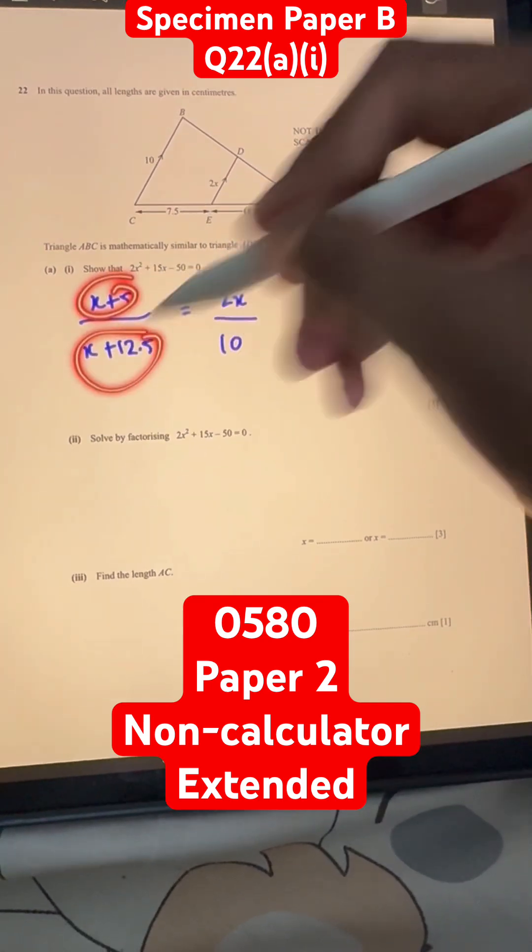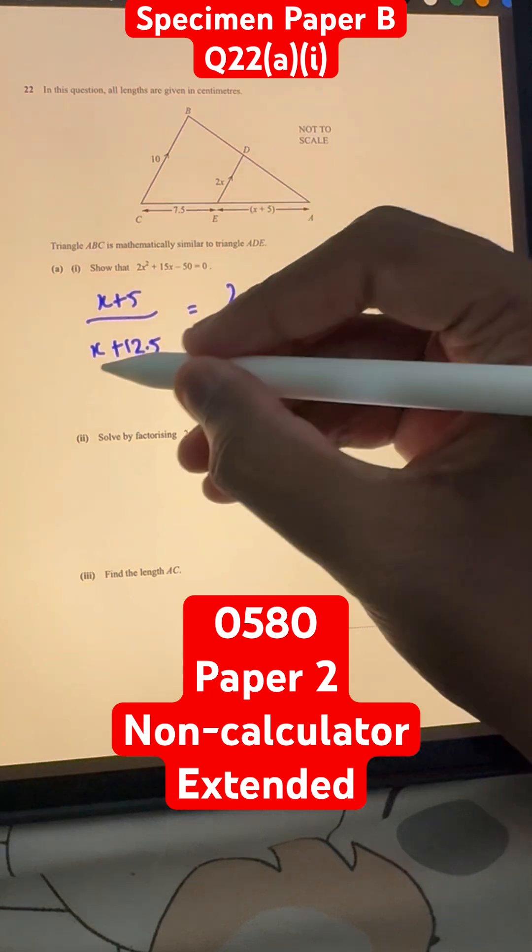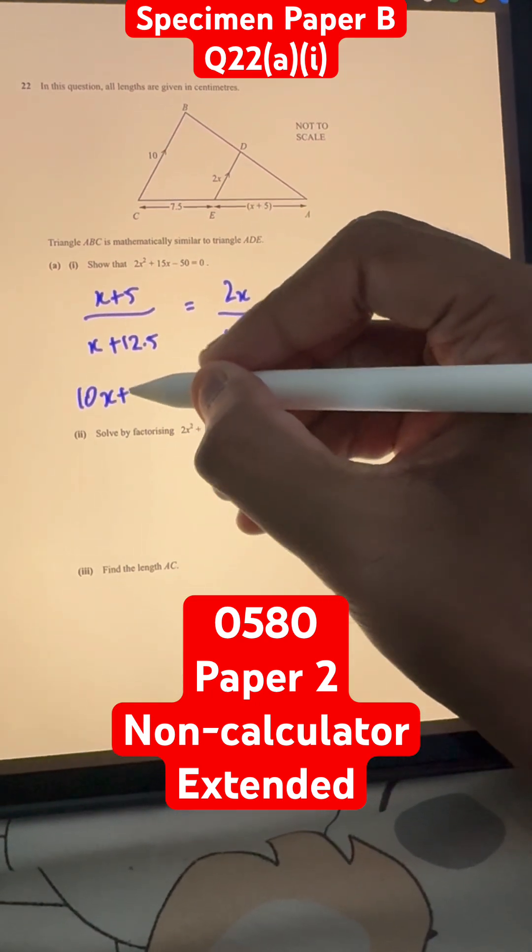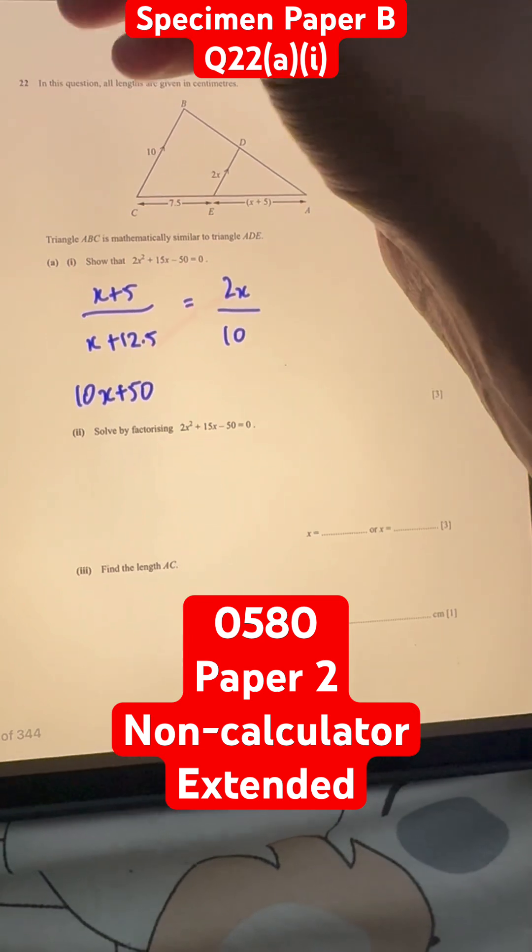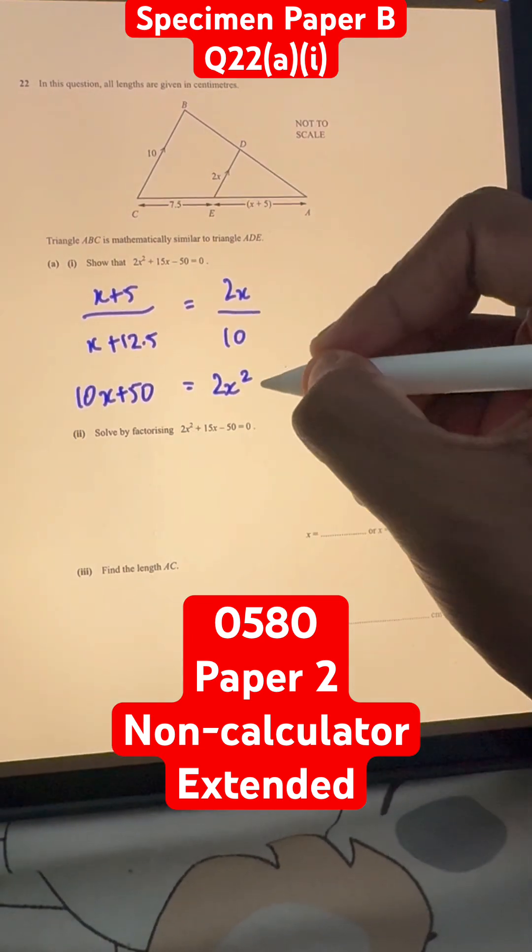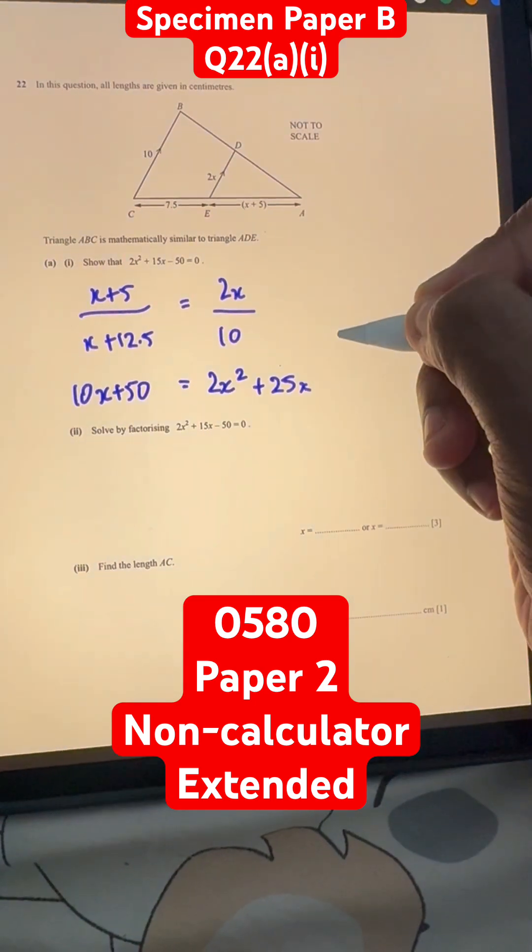So, smaller by larger equals smaller by larger. And now, we can cross multiply. So, we get 10x plus 50 by cross multiplying these two, and then by cross multiplying these two, we get this is equal to 2x squared plus 25x.